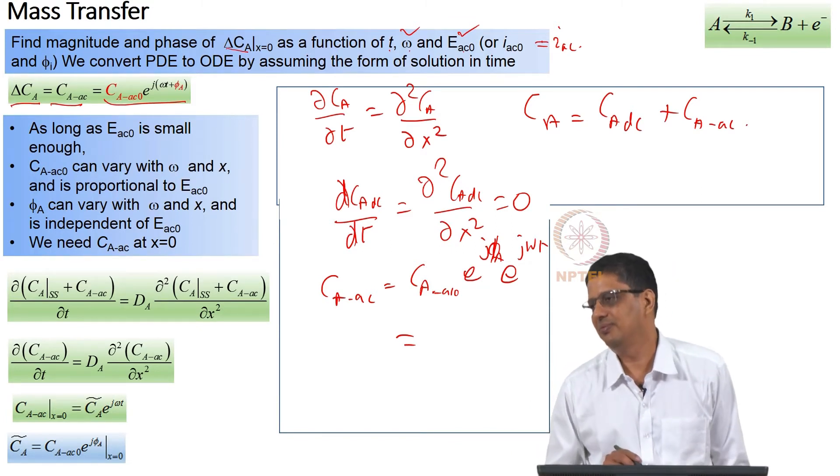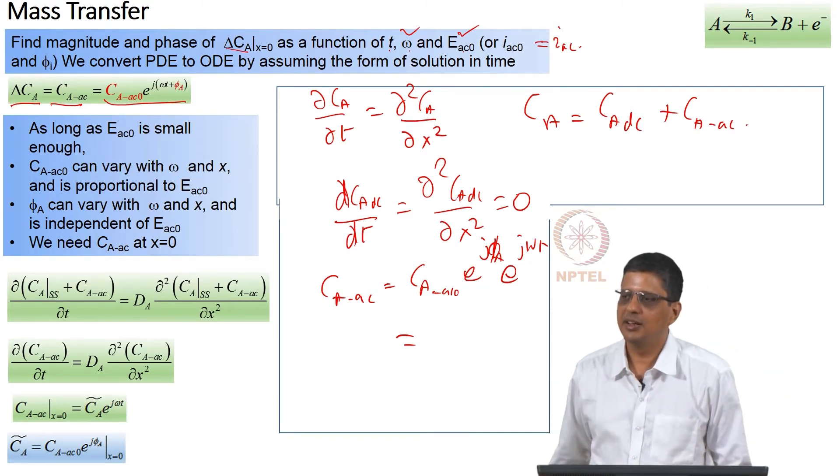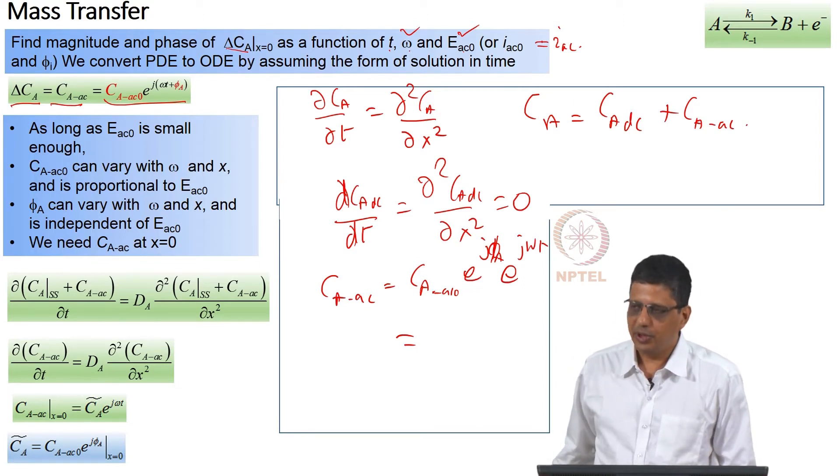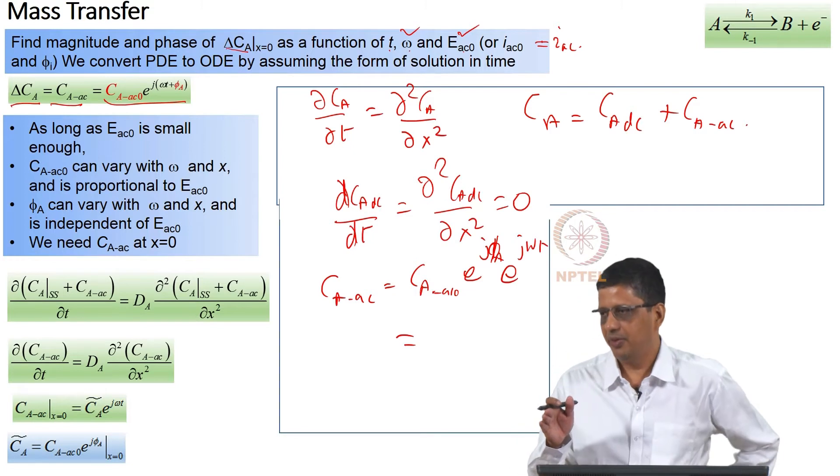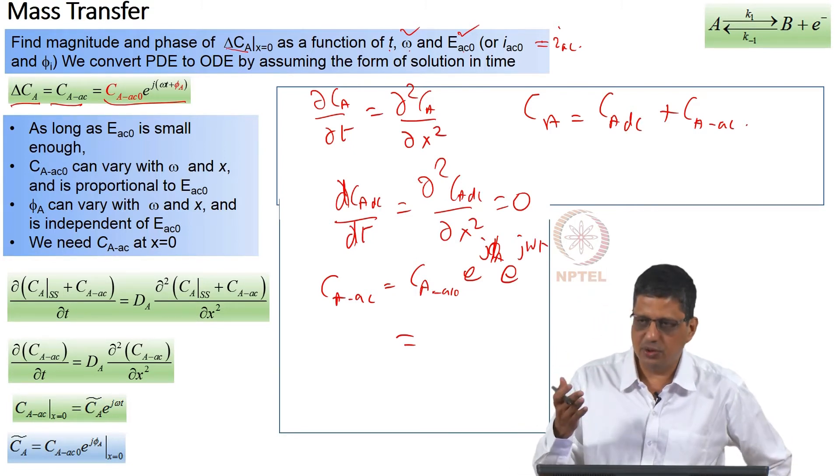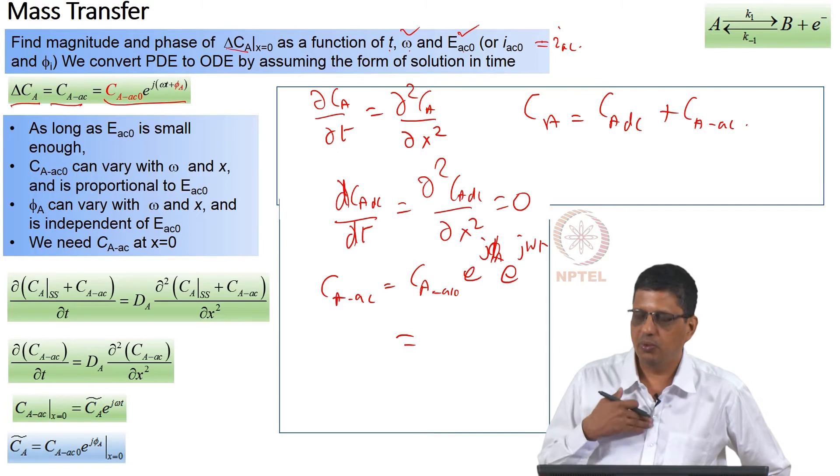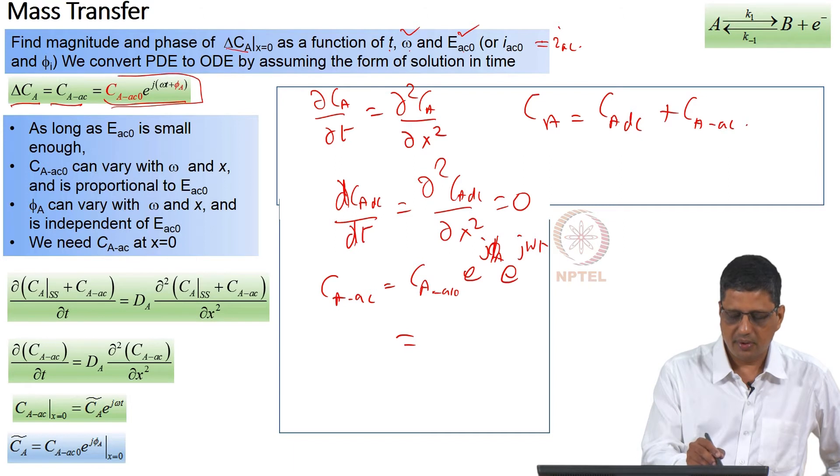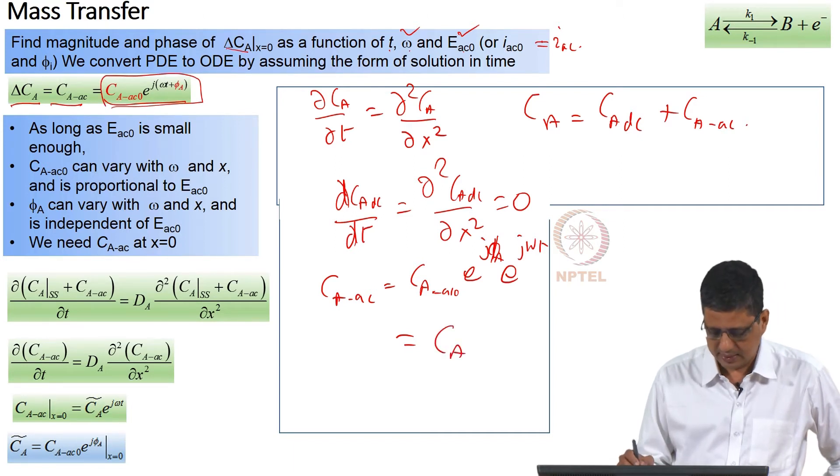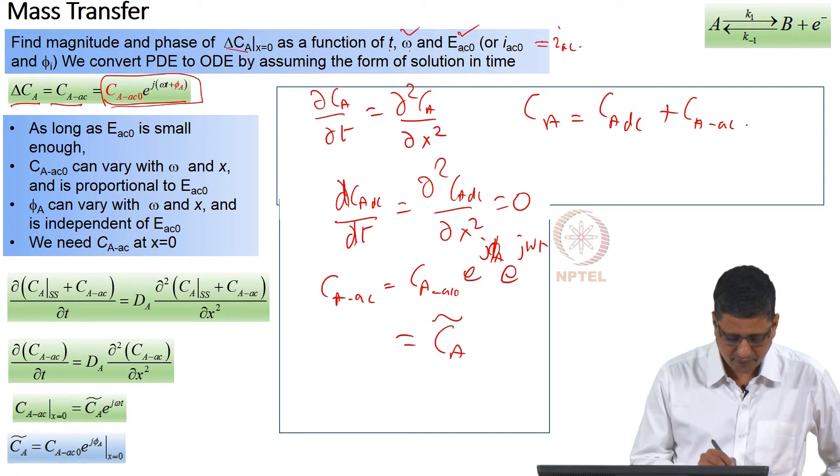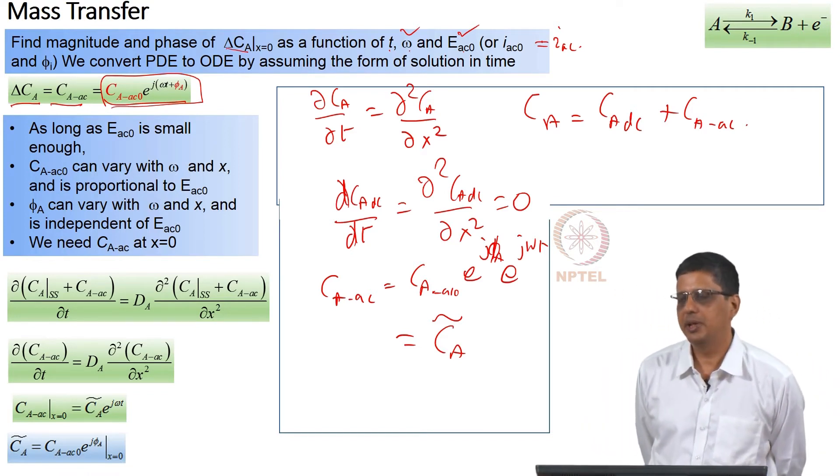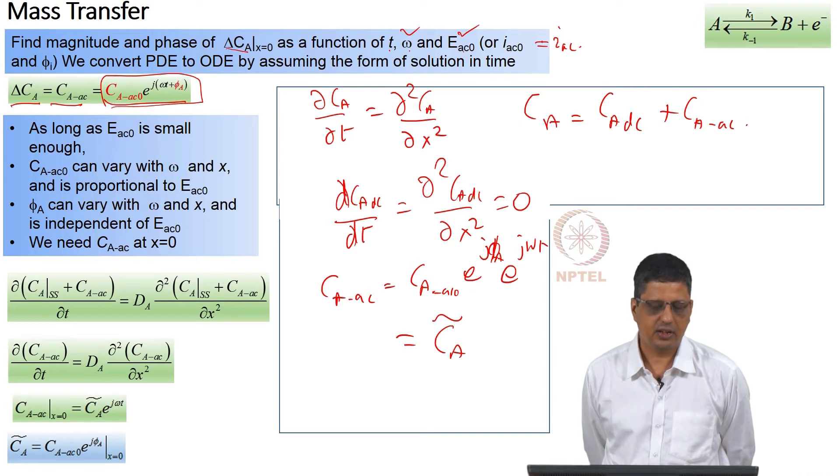Current has to be sinusoidal. Current has to be sinusoidal when E_AC_0 is small. Frequency can be large or small or medium but that will correspond to a nonzero phase. It is easy for us to visualize what happens when frequency is very, very low. But why would I expect it to be non-sinusoidal? When E_AC_0 is small, it has to be sinusoidal. Now, I have taken it in this form. I am going to write it as C_A tilde which corresponds to AC_0 and φ_A.